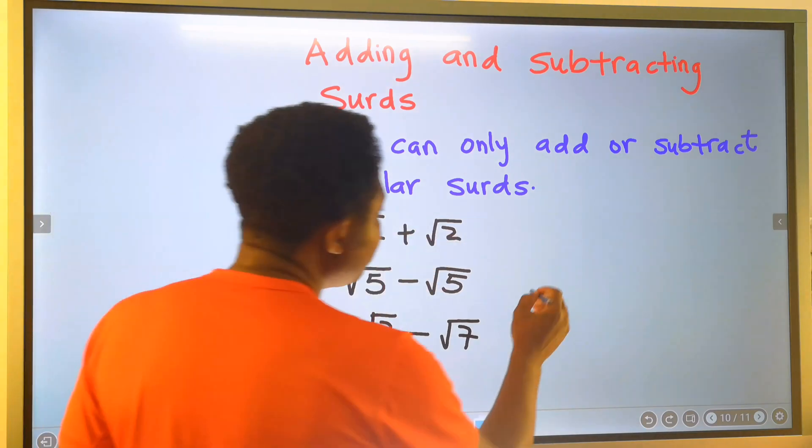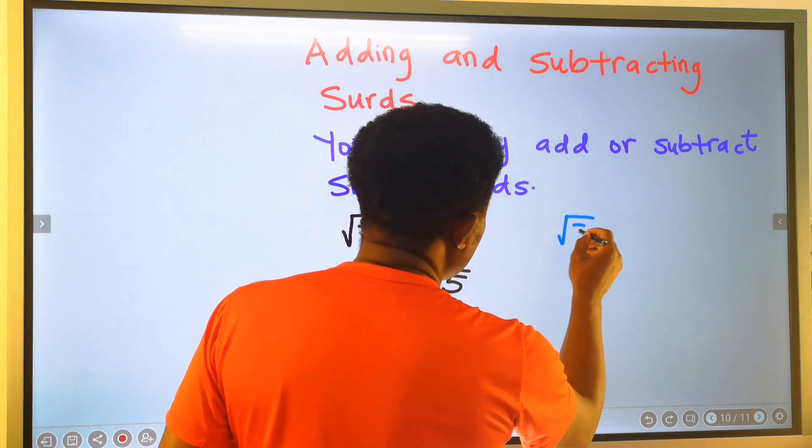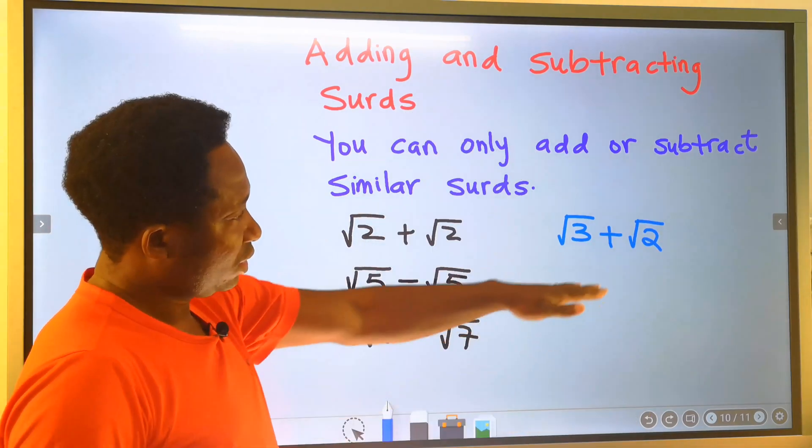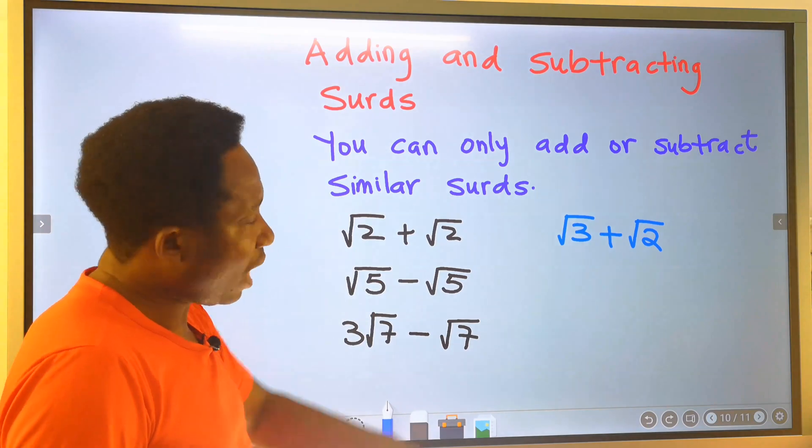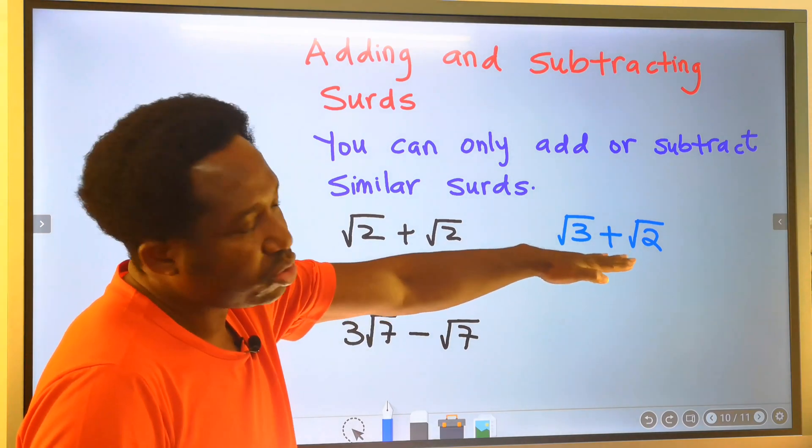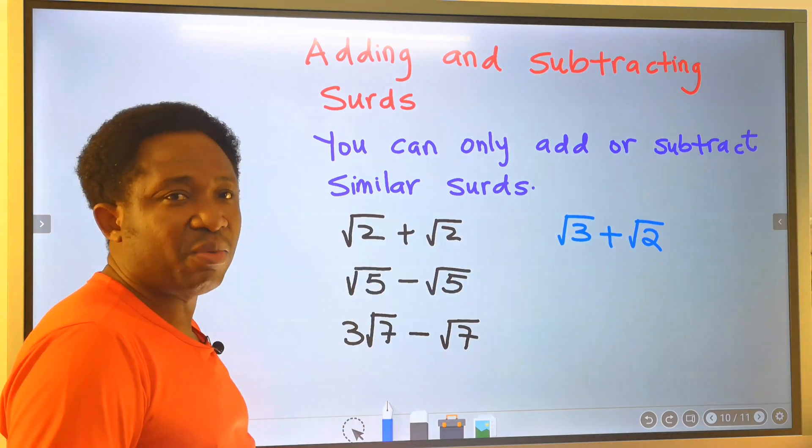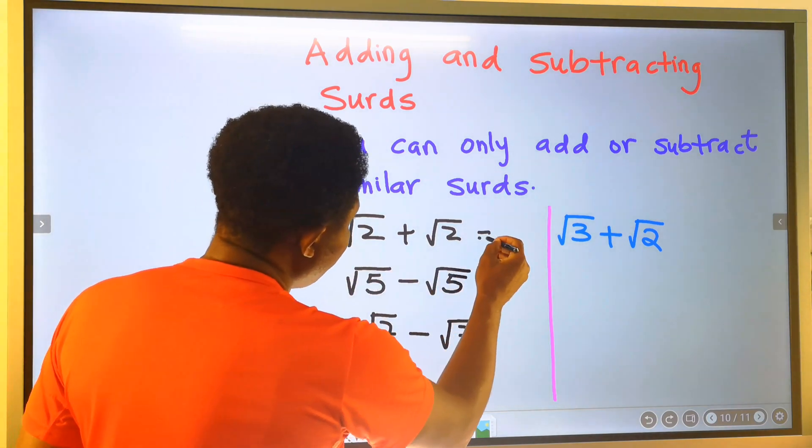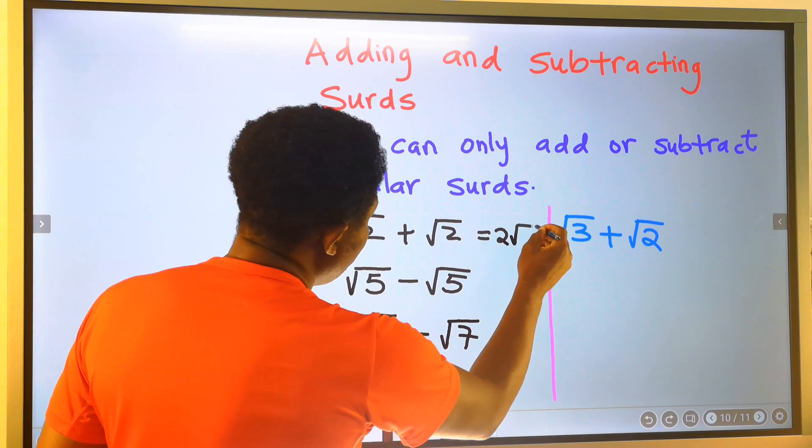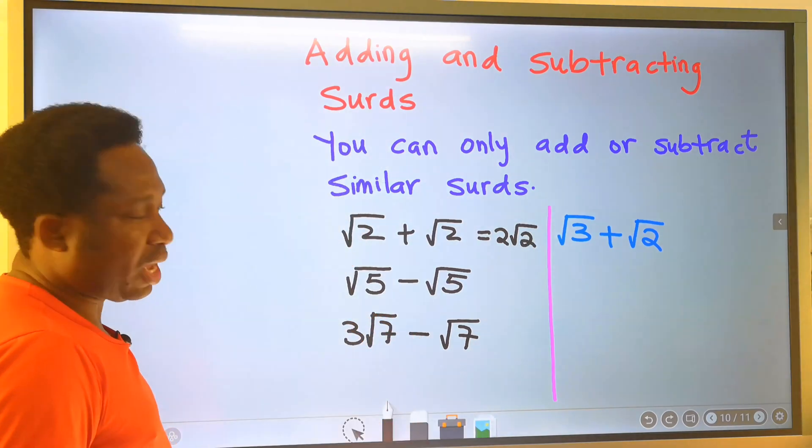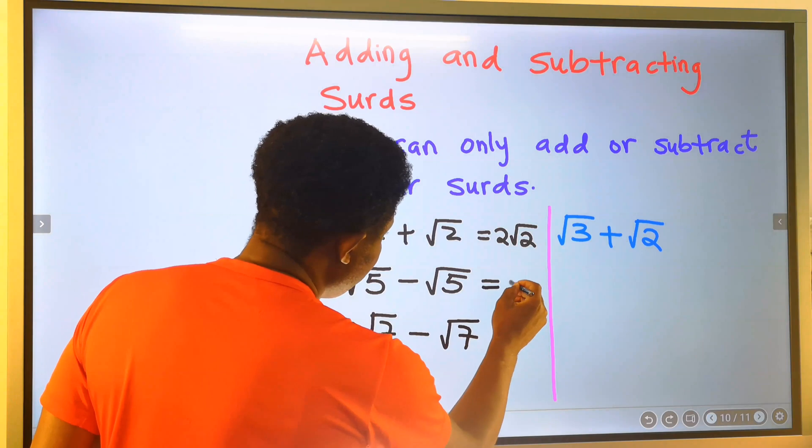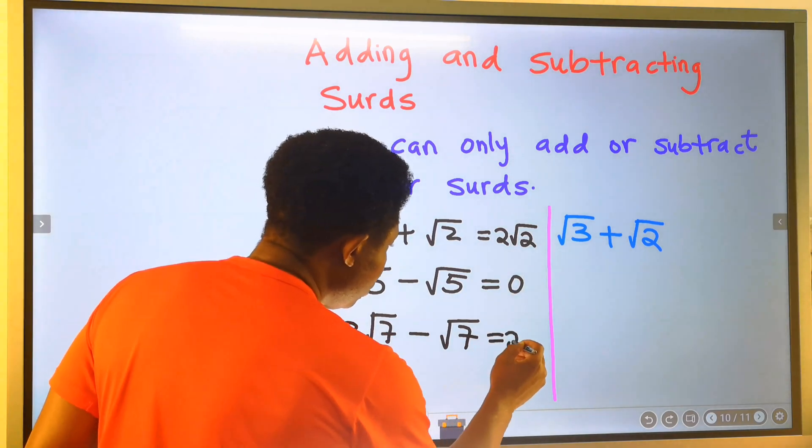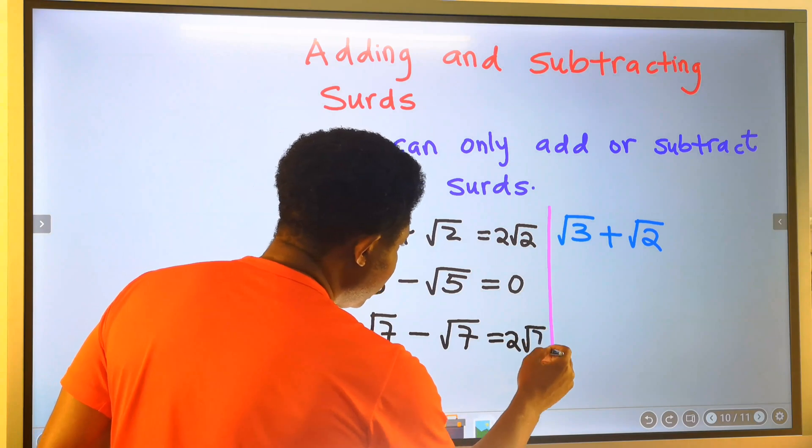If you have the square root of 3 plus the square root of 2, this is our final answer. We cannot break this down further. Unlike this, we are going to have here 2 root 2. And this becomes 0, while this becomes 2 root 7.